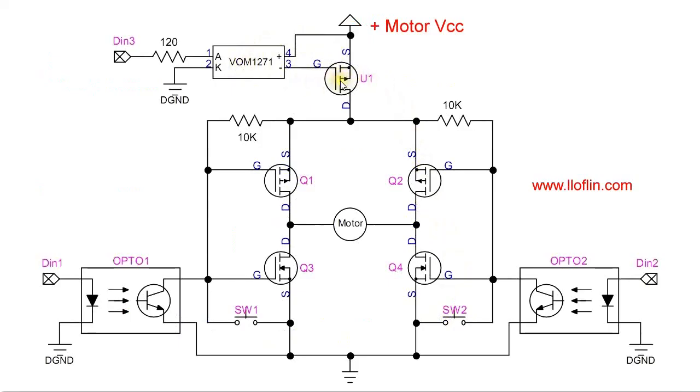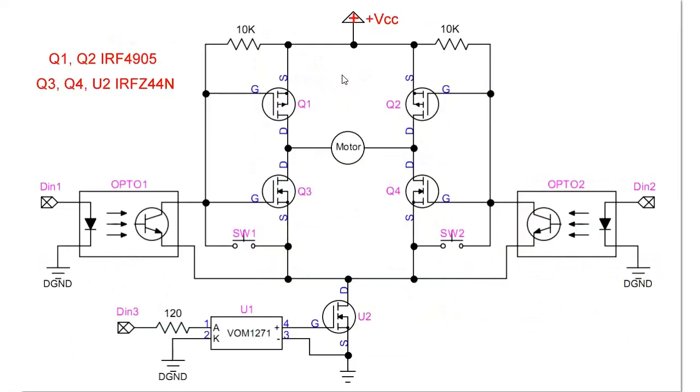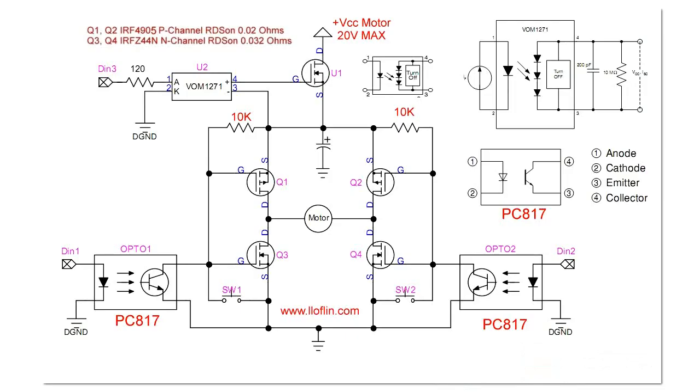And you could go ahead and switch out this P-channel for an N-channel. Here, I have replaced the P-channel MOSFET with an N-channel MOSFET. And so, I've solved part of that problem.